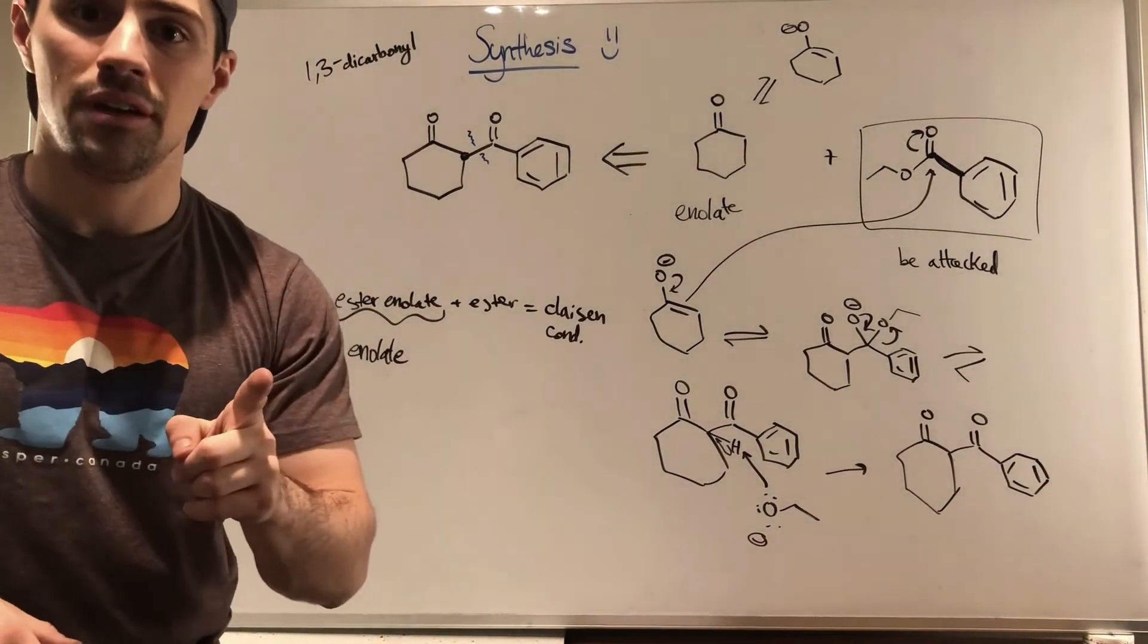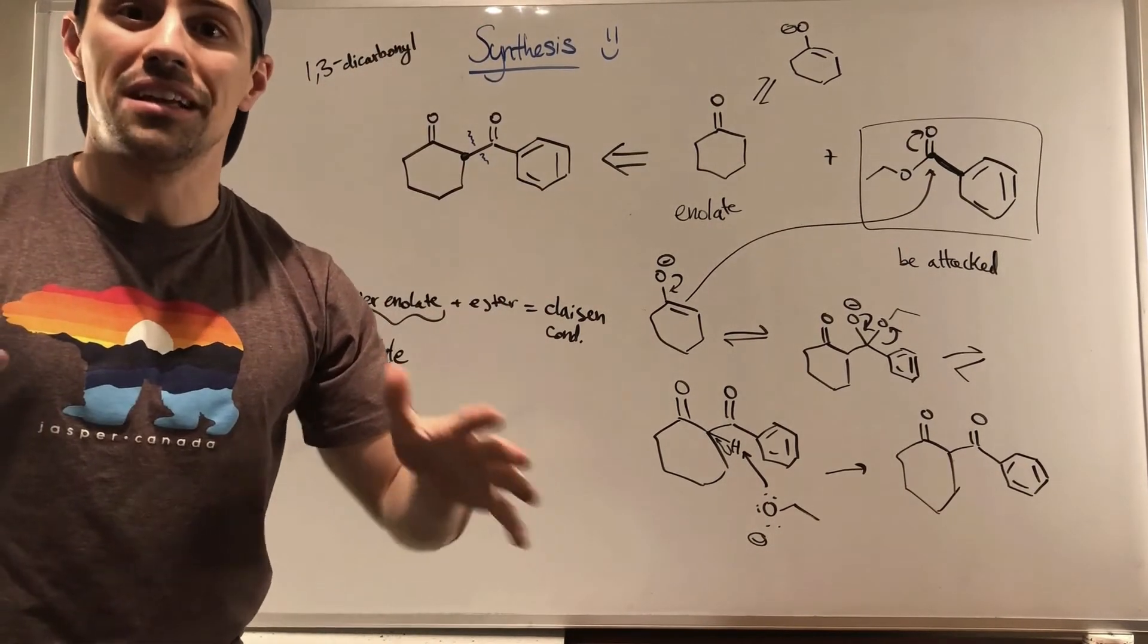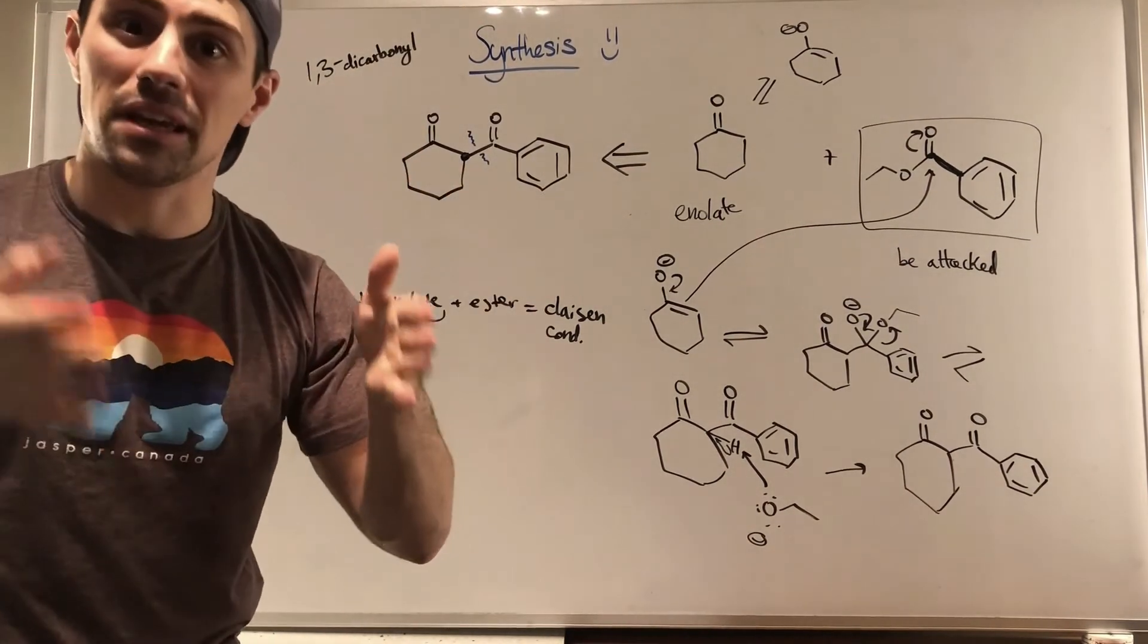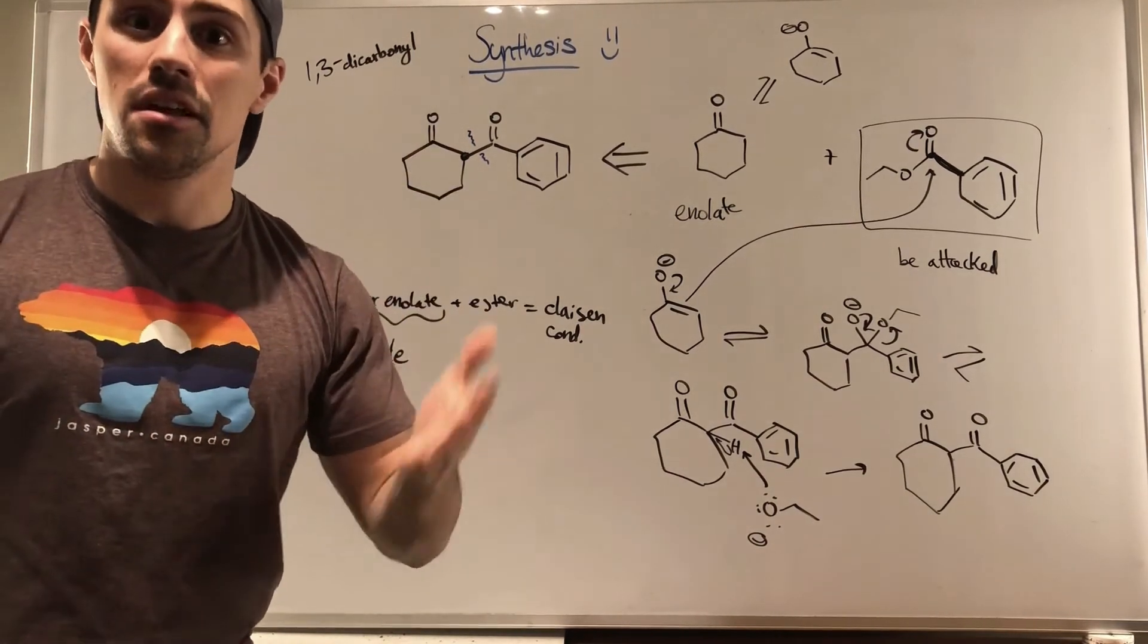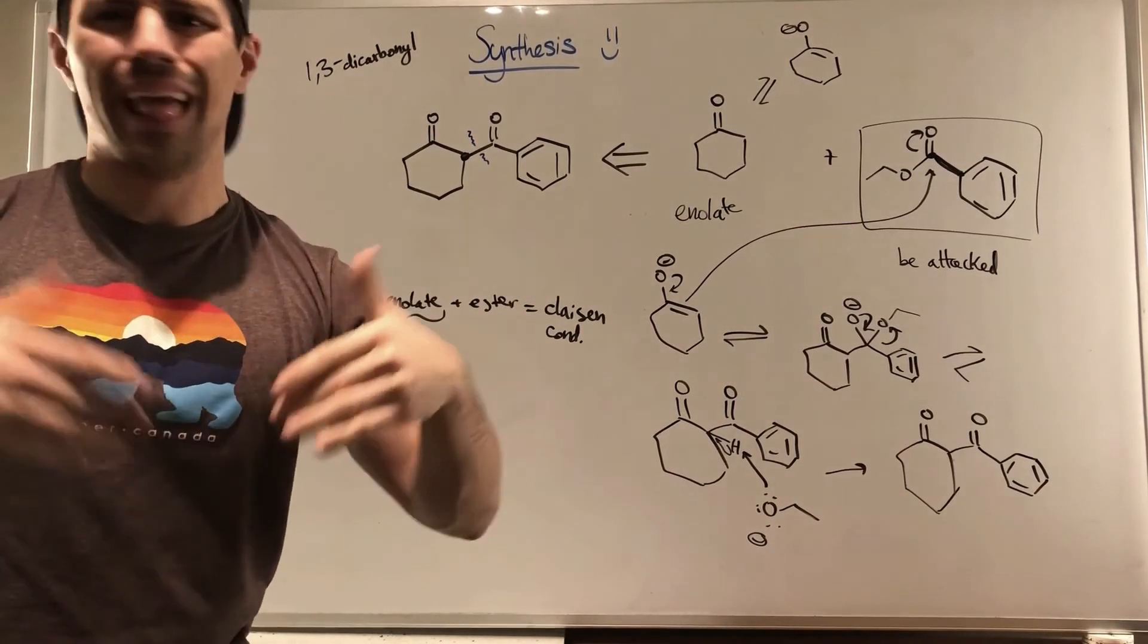So then we have a negative charge here and then we'd have some acidic workup to quench that and bring it on home. So the point being, don't think the formula is ester turned into enolate plus ester equals Claisen. It can be enolate plus ester. Make sure you have the requirement for the protonation at the end. Boom, you have a Claisen. Okay. So one more example. Thanks for hanging with me. One more. Let's get it.